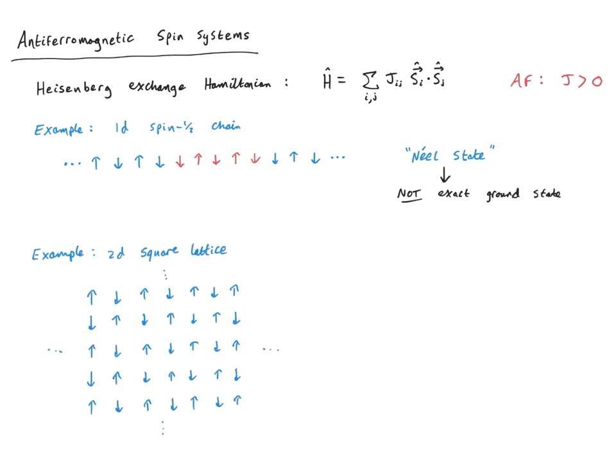We can also consider systems with different geometry, such as the 2D square lattice. Here we can again imagine a Néel-type state with pristine anti-ferromagnetic ordering, where every spin is surrounded by nearest neighbours of opposite s_z. Here too, the pristine anti-ferromagnetic ordering is not present in the exact ground state. If I flip a pair of spins, I create domain walls where parallel spins appear. The true ground state is much more complex.